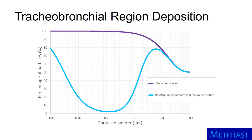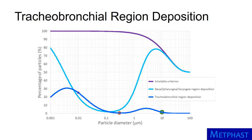Overall deposition in the tracheobronchial region is relatively low. While about 25% of 10 nanometer particles deposit here, less than 1% of 300 nanometer particles and only about 1.5% of 10 micrometer particles do. The medium blue curve from the ICRP shows the percent of particles deposited in the tracheobronchial region for all particle diameters. Deposition for particles larger than 3 micrometers and smaller than 10 nanometers would be greater if many of these particles were not already depositing in the nasal pharyngeal-laryngeal region.